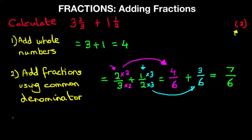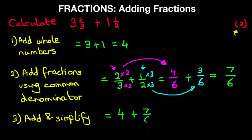Now we're not done yet. The final step is to add the whole numbers and the fractions, add and simplify where necessary. We have four, which is adding the whole numbers, and adding the fractions we had seven-sixths. Now rewriting this, the seven-sixths becomes one and one-sixth. So now we have four plus one and one-sixth. Add them together, we have five and one-sixth. So that is our answer, five and one-sixth.